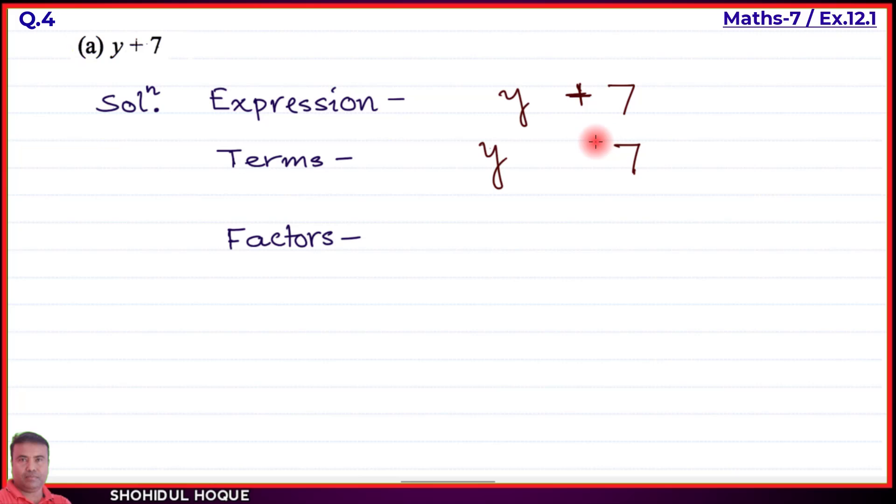Now using the tree method to show terms and factors. The expression branches into two terms. The first term y has factors: one letter y. The term y has one factor.